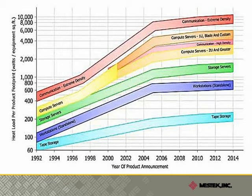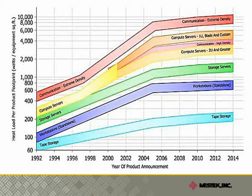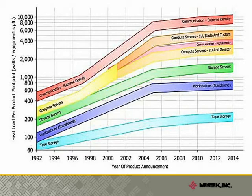That heat load is growing with the increasing server densities necessary to meet the rapidly growing demand for digital information transfer. While a typical commercial office building might have cooling requirements of 10 or 20 watts per square foot, some IT applications have cooling requirements approaching 10,000 watts per square foot of equipment. Even if you spread the equipment out over a warehouse-size space, it is obvious that the cooling load is enormous.